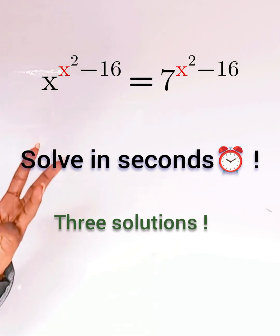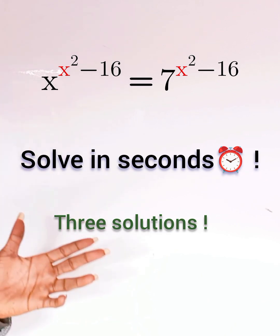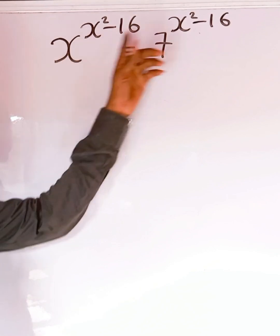This equation actually has three solutions. One of the solutions is glaring. It's very, very obvious because x to the power, since the powers are the same,